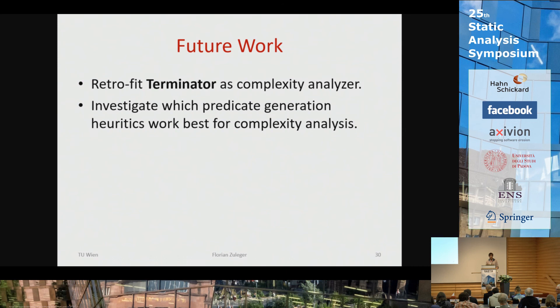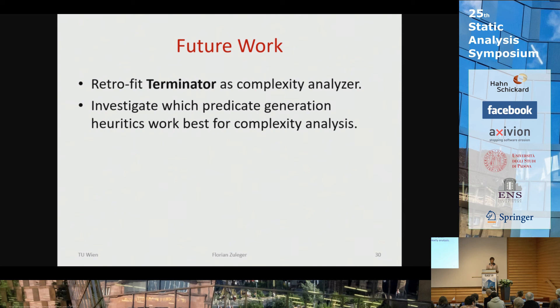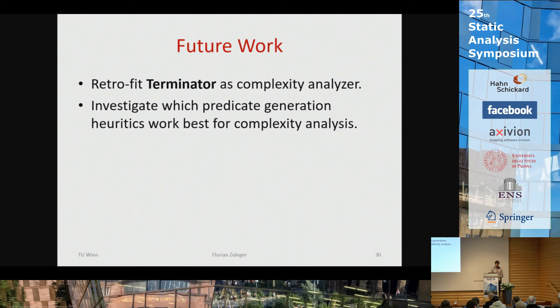Question: Another method for proving termination is ranking functions — can you derive a ranking function from the automata? Answer: This is very interesting. For size change abstraction corresponding to deterministic automata, I had a partial result and was able to extract ranking functions that also capture the complexity precisely — you can take a size change termination proof and extract a ranking function even if the original proof was not by ranking functions. For the general case we still don't know how to do it precisely, but it should be possible, and this relation should carry over to ranking functions for termination proofs by transition invariants.